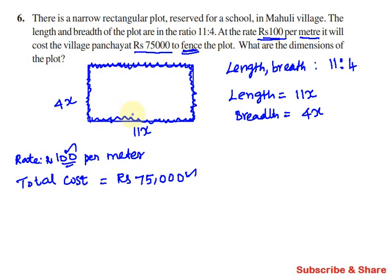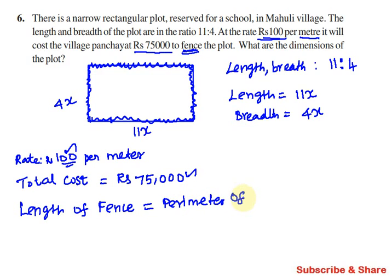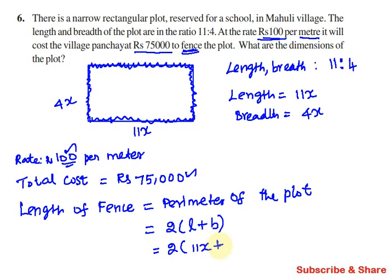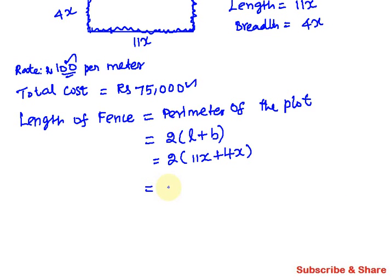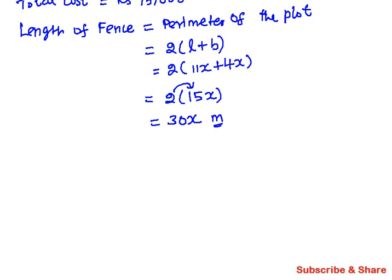To fence the plot, we need the total outer length, which is the perimeter. Perimeter is the sum of all outer lengths. Using the perimeter formula: 2 into (length + breadth) = 2 into (11x + 4x) = 2 into 15x = 30x meters.